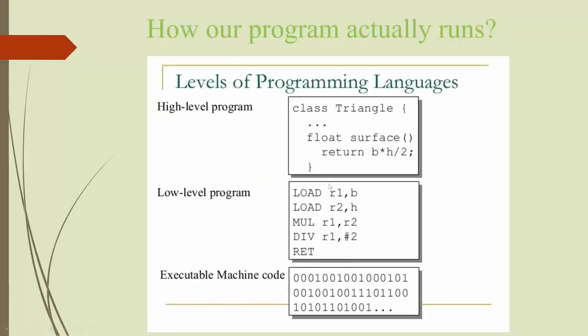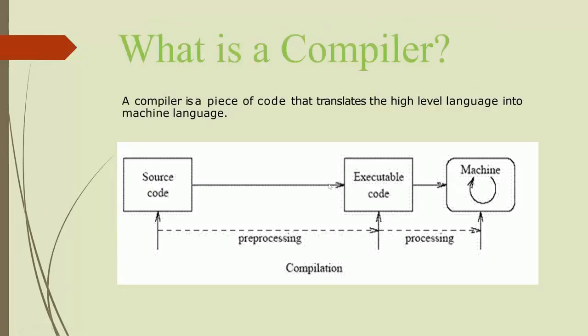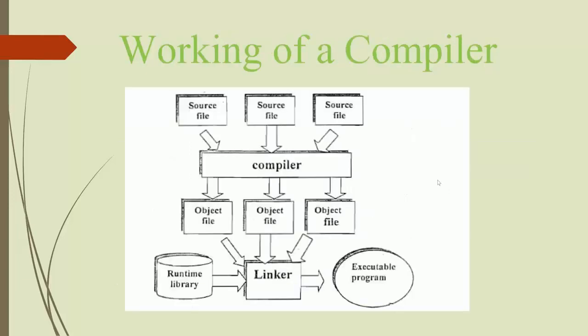Let's see what a compiler is. A compiler is a piece of software that translates high-level language into machine-level code. It takes the source code and converts it into executable code — this step is known as the pre-processing step. Then the executable code, which is zeros and ones or sometimes assembly code, is converted into machine code and executed. So compilation consists of two steps: pre-processing and processing. The compiler goes through the whole program, reads every statement, notes errors, and asks for corrections before finally generating executable code once no syntactical errors remain.